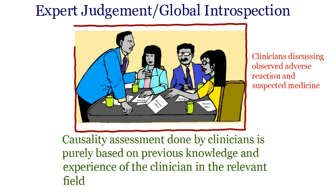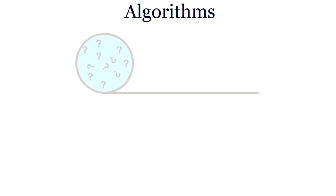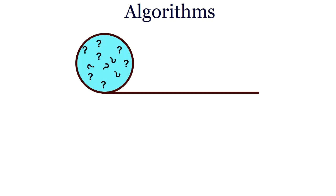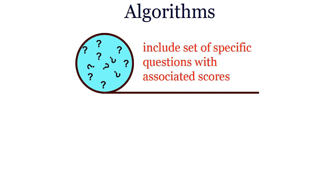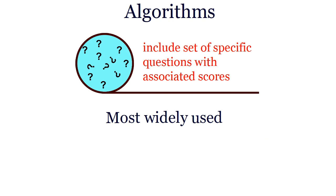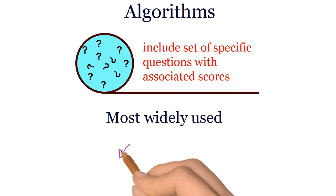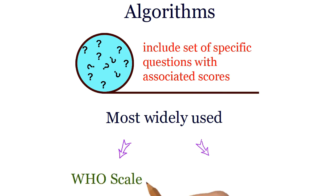The second method is algorithms. This includes a set of specific questions with associated scores for calculating the likelihood of a cause-effect relationship between the medicine and the adverse reaction. There are many algorithms developed for causality assessment, but no single one is universally accepted. The most widely used algorithms are the WHO scale and the Naranjo scale. Can you explain one of these algorithms and how the scoring method actually works?